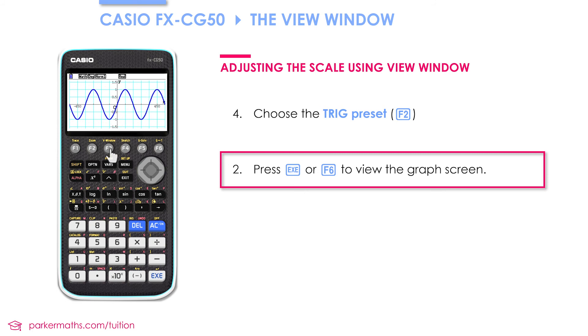If I didn't want to see this much of the curve, I could of course go into the view window and change these values to something more suitable. I might decide the graph is going to start at zero, in which case I'd get a little bit less of it.